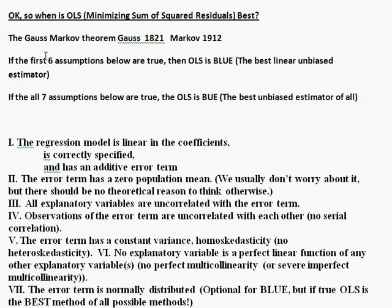When is minimizing the sum of the squared residuals the best way to find a slope and y-intercept for a relationship? The solution to this problem was proved by two people, and we call it the Gauss-Markov theorem after those two people who first proved it.